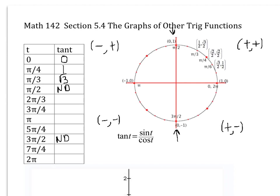There are vertical asymptotes at those two places. At two pi over three, the tangent is negative radical three. At three pi over four, the tangent is negative one. At pi, the tangent is zero. At five pi over four, in quadrant three you're positive again, so it's one. In quadrant four at seven pi over four, it's negative one. And when you get back to two pi, the tangent is zero.